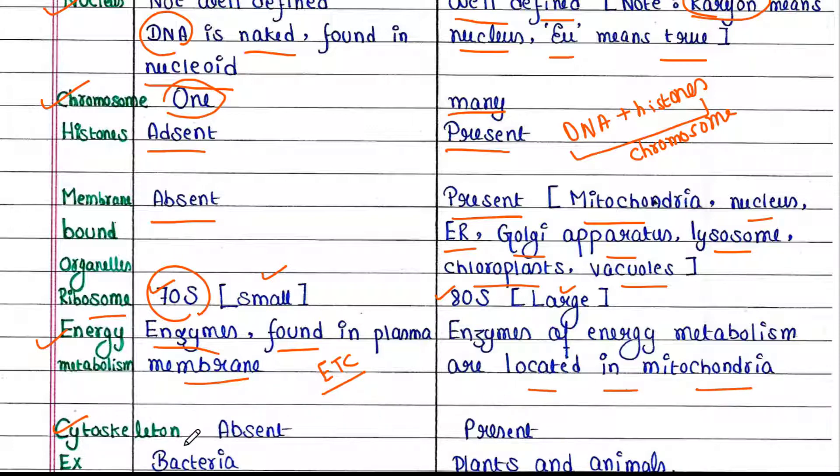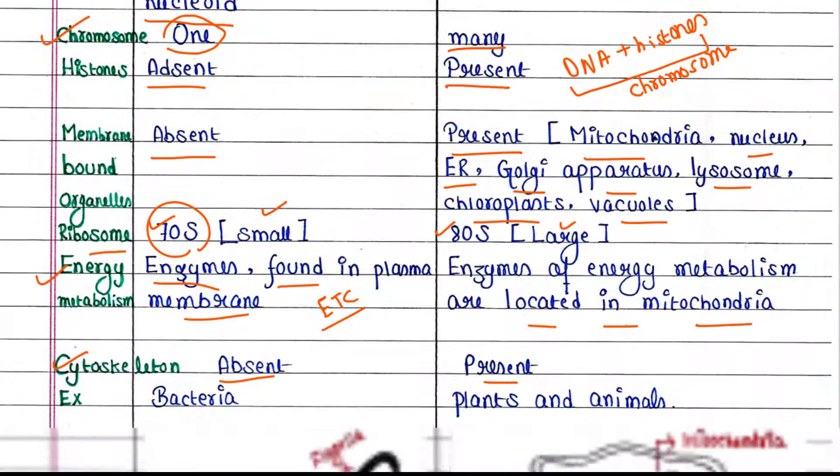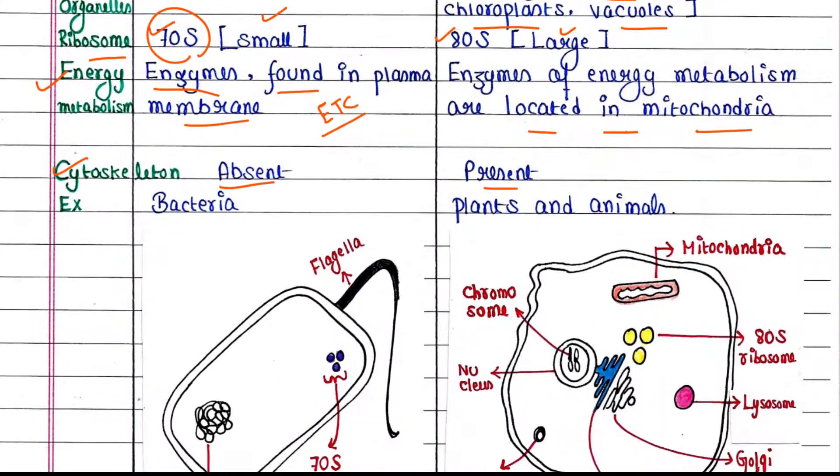Cytoskeleton: cytoskeletal structures are absent in prokaryotes and present in eukaryotes. Next, we can see some examples.